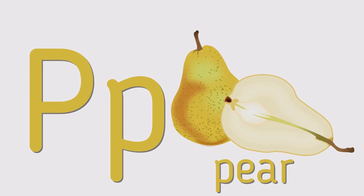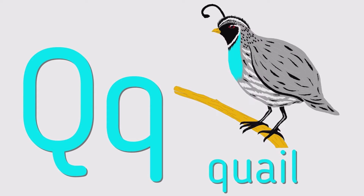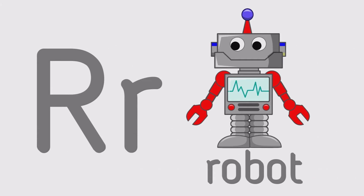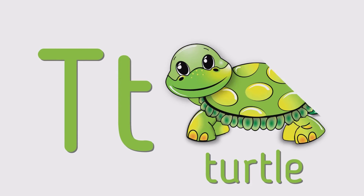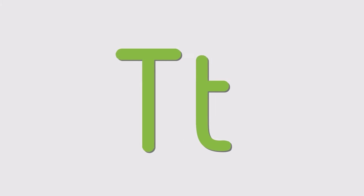P for Pear, Q for Quail, R for Robot, S for Socks, T for Turtle, U for Umbrella.